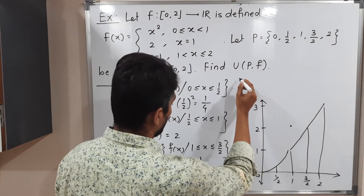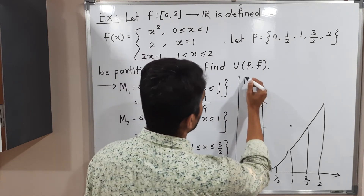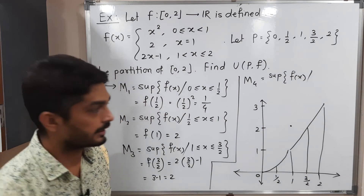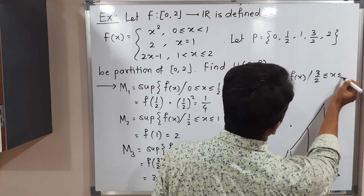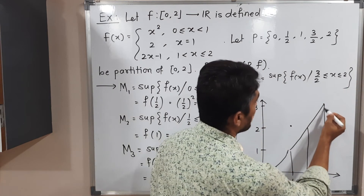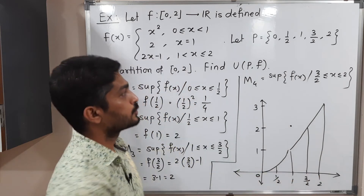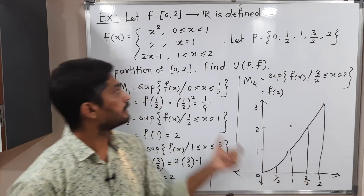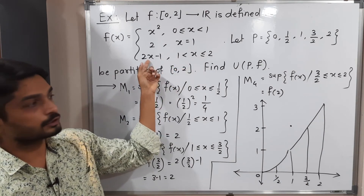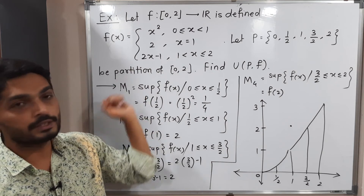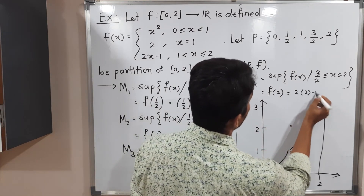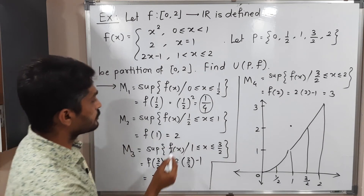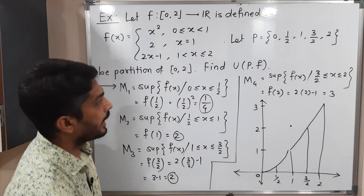M₄ is the supremum of f(x) on the interval [3/2, 2]. The function is increasing, reaching its maximum at x=2. Using the straight line definition: f(2) = 2(2) − 1 = 4 − 1 = 3. So M₄ = 3. To summarize: M₁ = 1/4, M₂ = 2, M₃ = 2, M₄ = 3.